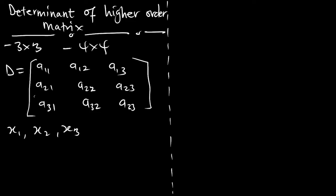We have to find a way to determine the determinants of this 3 by 3 matrix. First of all, we are going to assign a plus, a negative, a plus to these members. Starting from the first one: this is a plus, a negative, and a positive. The same pattern continues — positive, negative, positive. If here is negative, this will be positive, negative, positive. It always starts from a positive at the first element.